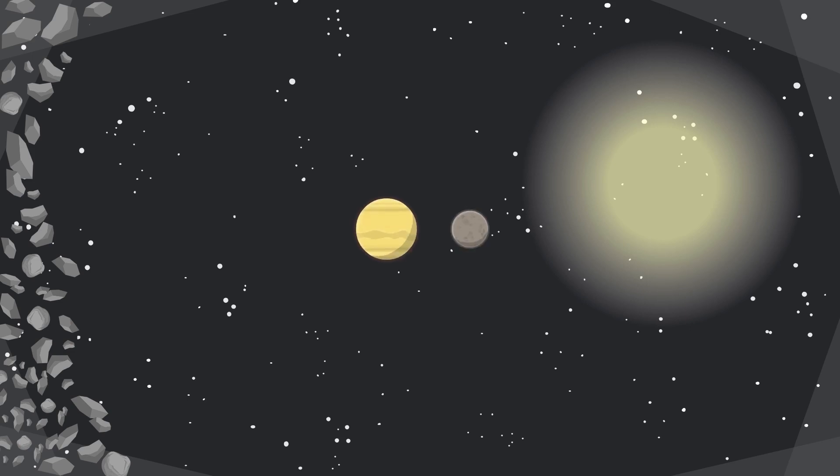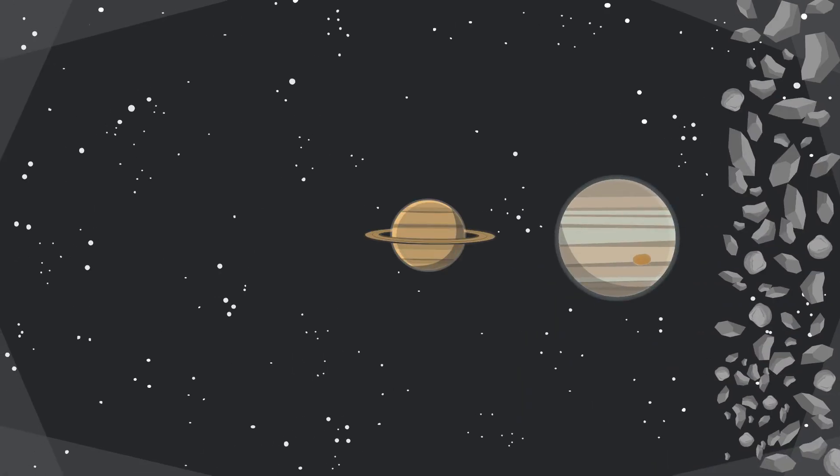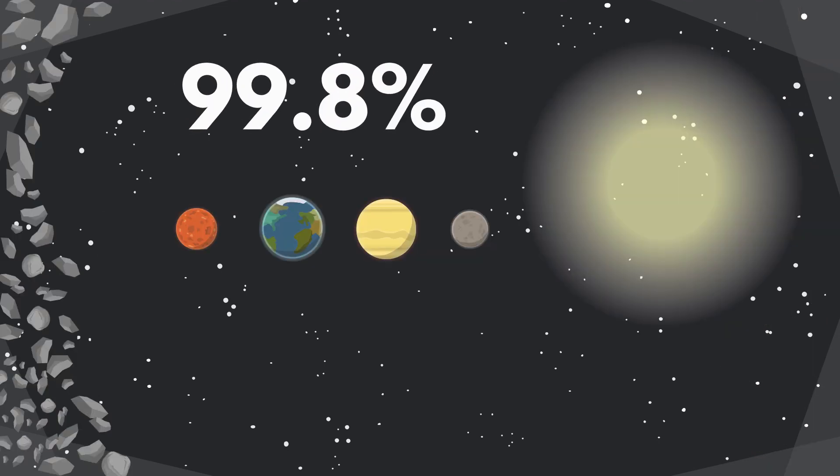Mercury, Venus, Earth, Mars, Jupiter, Saturn, Uranus, and Neptune. The Sun holds 99.8% of the solar system's mass.